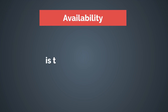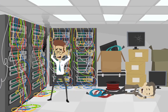Then there's availability, which means: is this data available? Let's say the John Hopkins email server stopped working for whatever reason — now you can't receive any email from your doctor about your test results. The availability of the system in this example has been compromised.